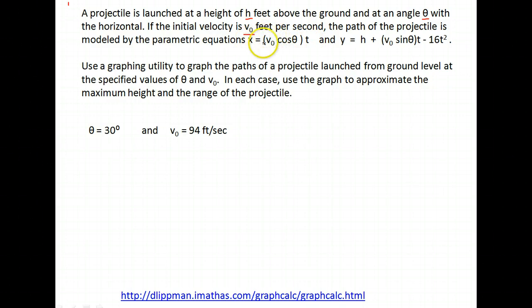So x equals v naught, remember that's our initial velocity or the starting velocity, cosine theta is our angle at which it's launched times t.